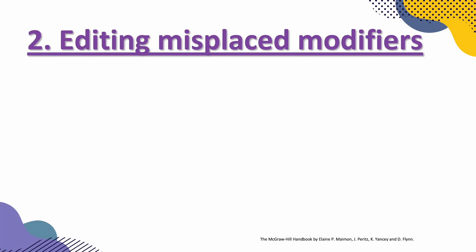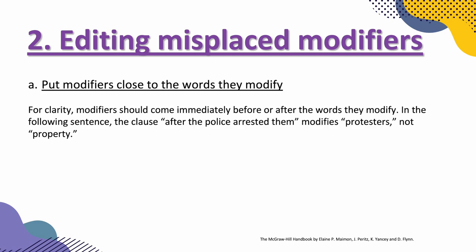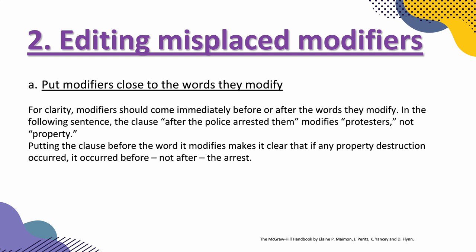Let's take a look at editing misplaced modifiers. The first point: put modifiers close to the words they modify. For clarity, modifiers should come immediately before or after the words they modify. In the following sentence, the clause 'after the police arrested them' modifies 'protesters,' not 'property.' Putting the clause before the word it modifies makes it clear that if any property destruction occurred, it occurred before, not after the arrest.